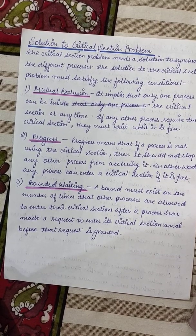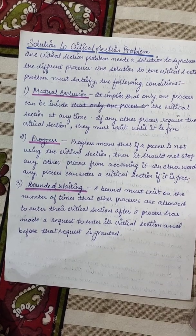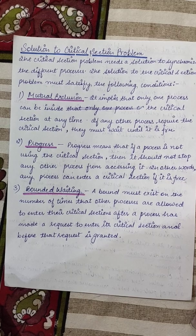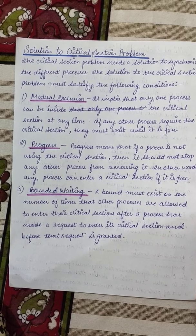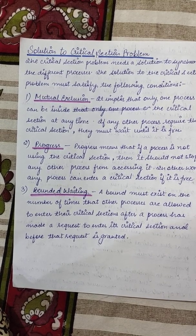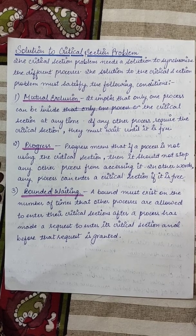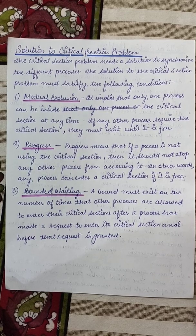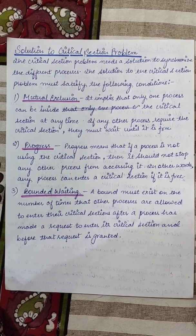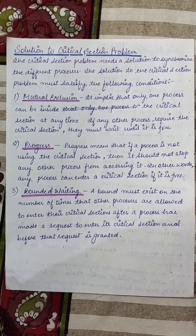Bounded waiting means a bound must exist on the number of times other processes are allowed to enter the critical section after a process has made a request to enter and before that request is granted. For example, if P1 has requested to enter the critical section, there is a limit on how many times P2 can enter before P1 is granted access. Whatever solutions we find, we check whether they satisfy these three parameters, and if they do, it is the correct solution.